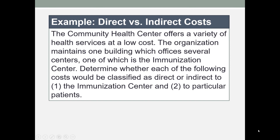The Community Health Center offers a variety of health services at a low cost. The organization maintains one building which houses several centers, one of which is the immunization center. Determine whether each of the following costs would be classified as direct or indirect to the immunization center and to particular patients. So we have a center that has an immunization center and maybe an outpatient surgery center.